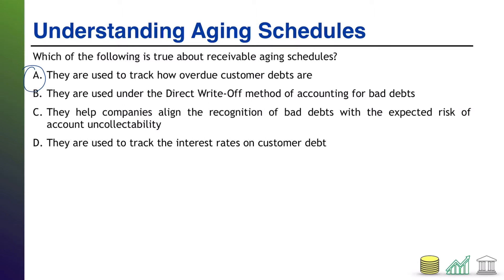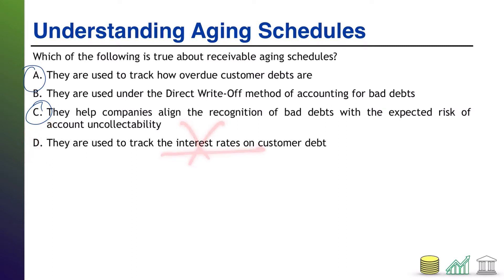C: they help companies align the recognition of bad debts with the expected risk of account uncollectibility — and that is also true. As debts get older, they become riskier, and you estimate a greater portion of them as uncollectible based on your aging schedule, so you record higher bad debts for the riskier receivables. D: they're used to track the interest rates on customer debts — that is not true. Aging schedules have nothing to do with interest rates; they're about how overdue a debt is and what portion you think you won't collect. So two of these were right.